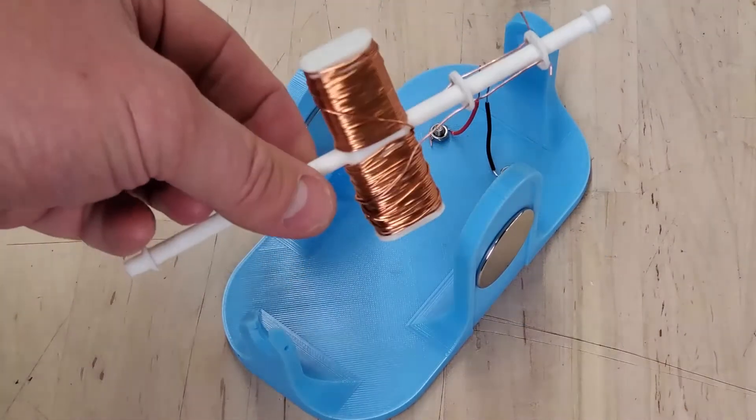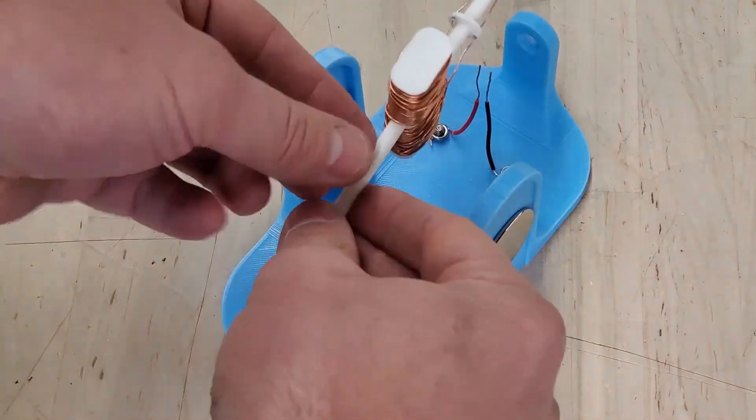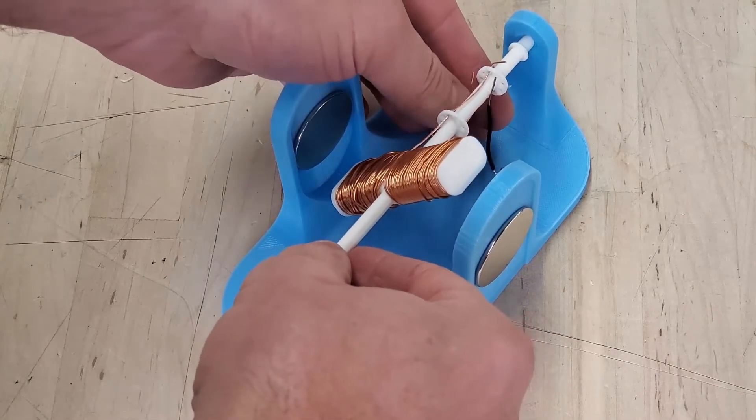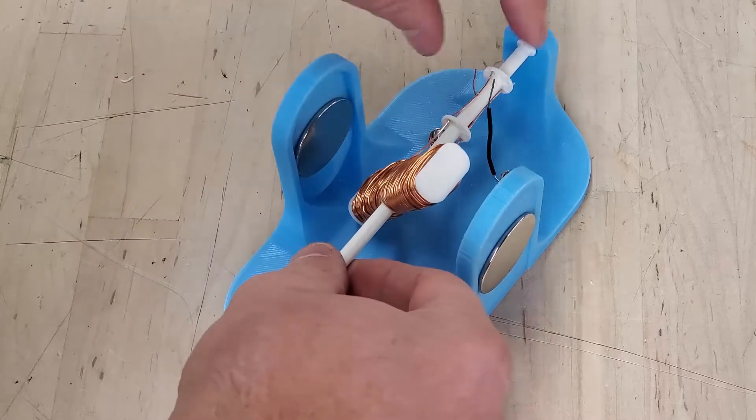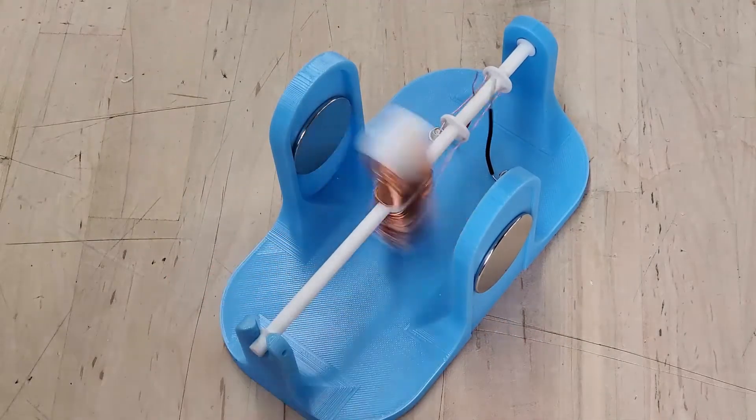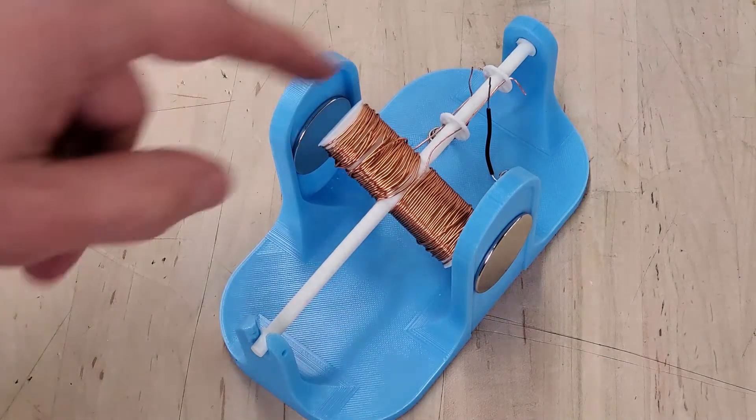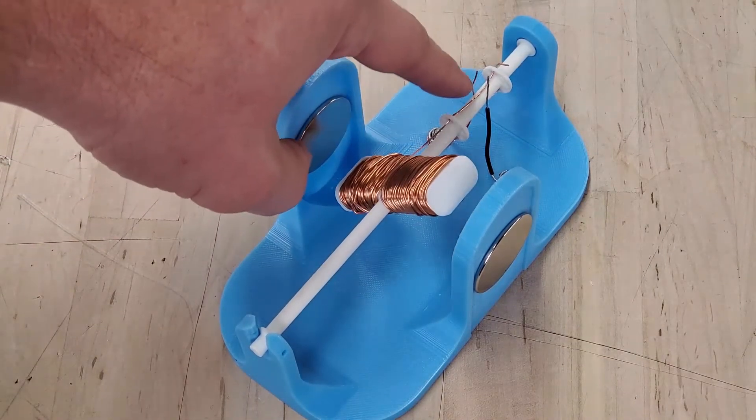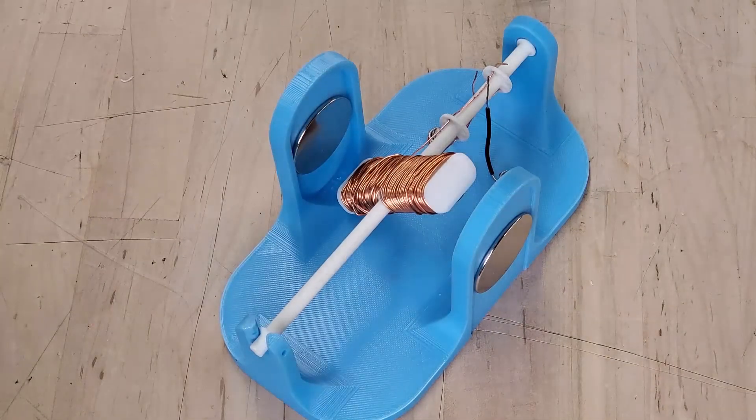Now grab your motor armature and rotor and carefully place it right between your two metal brushes. Make sure it spins freely. You also want to make sure your brushes are in contact with your commutator here. Now bring in your DC power supply.